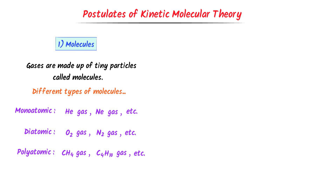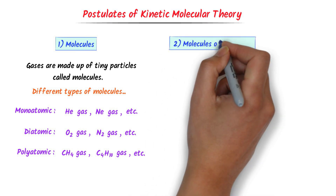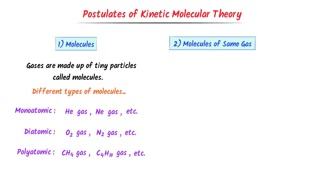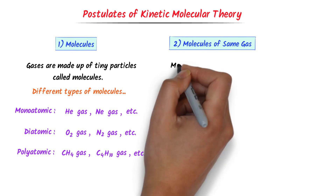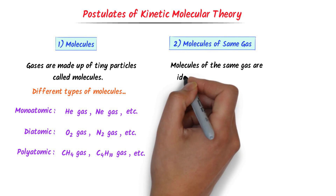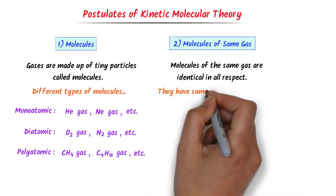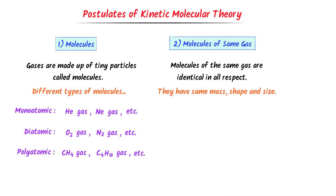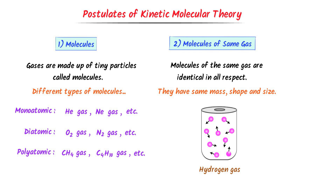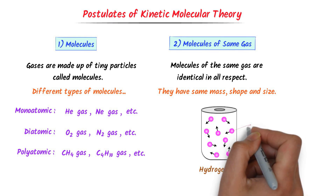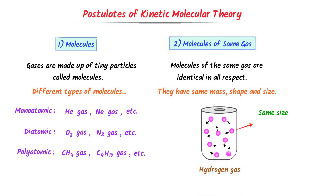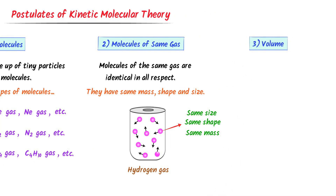The second postulate of the Kinetic Molecular Theory is about molecules of the same gas. It states that molecules of the same gas are identical in all respects — they have the same mass, shape, and size. For example, the molecules of hydrogen gas have the same size, same shape, and same mass.